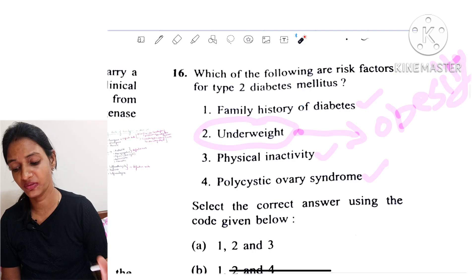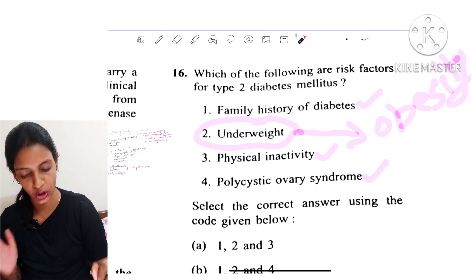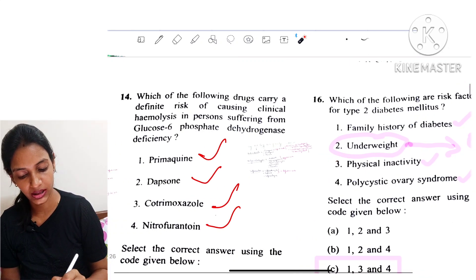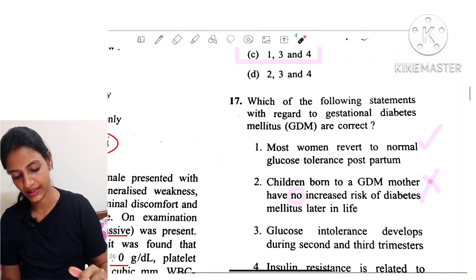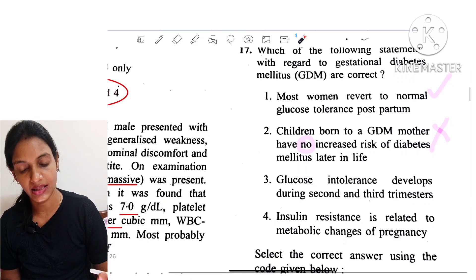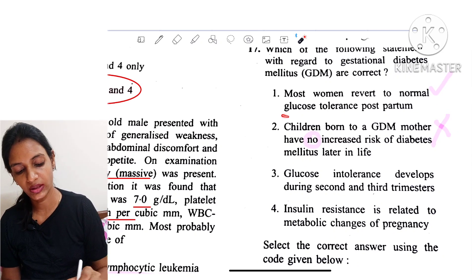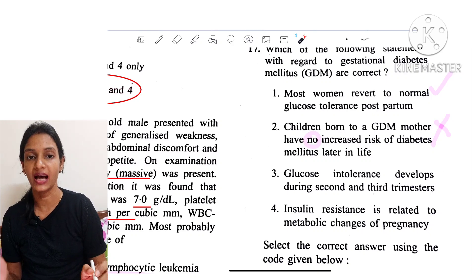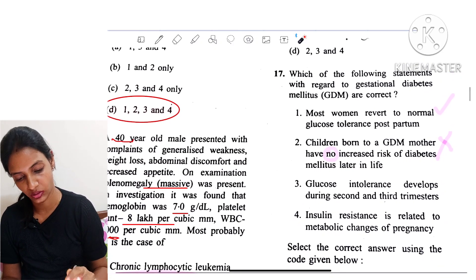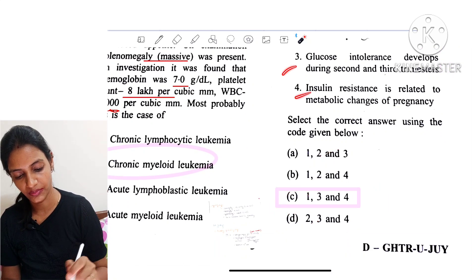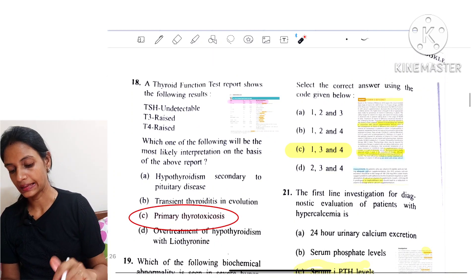Question 16: Which of the following are risk factors for type 2 diabetes mellitus? Obesity is a risk factor — not underweight. So options 1, 3, and 4 are true; option 2 is wrong. Question 17: Which statements about gestational diabetes mellitus are correct? Most women revert to normal glucose tolerance postpartum — true. Children born to GDM mothers have no increased risk of diabetes — that is wrong; they do have increased risk. So option 2 is ruled out, and options 1, 3, and 4 are correct.